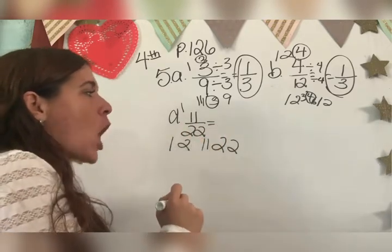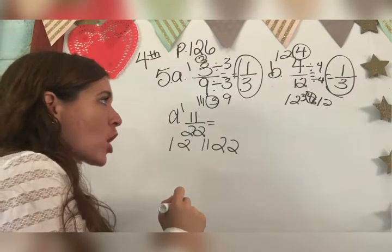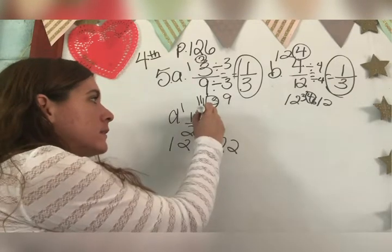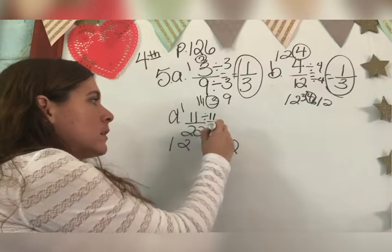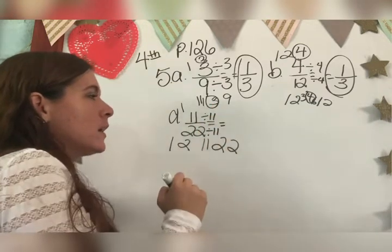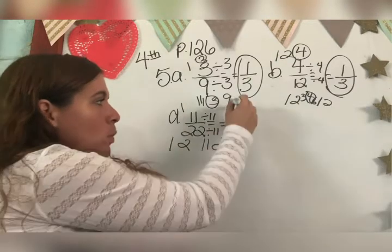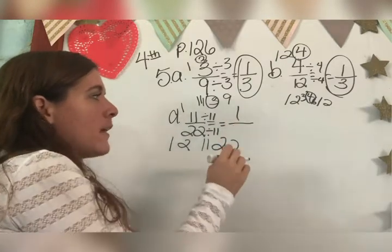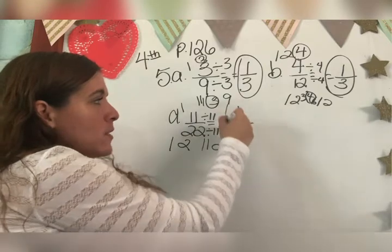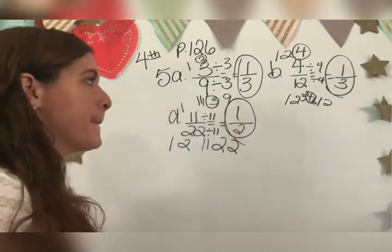Okay. So what's my greatest common factor, Scarlett? Eleven. Good. What's eleven divided by eleven, Sama? One. Twenty-two divided by eleven, Jayla? Two. So my answer is one-half. Bada-bing, bada-boom.